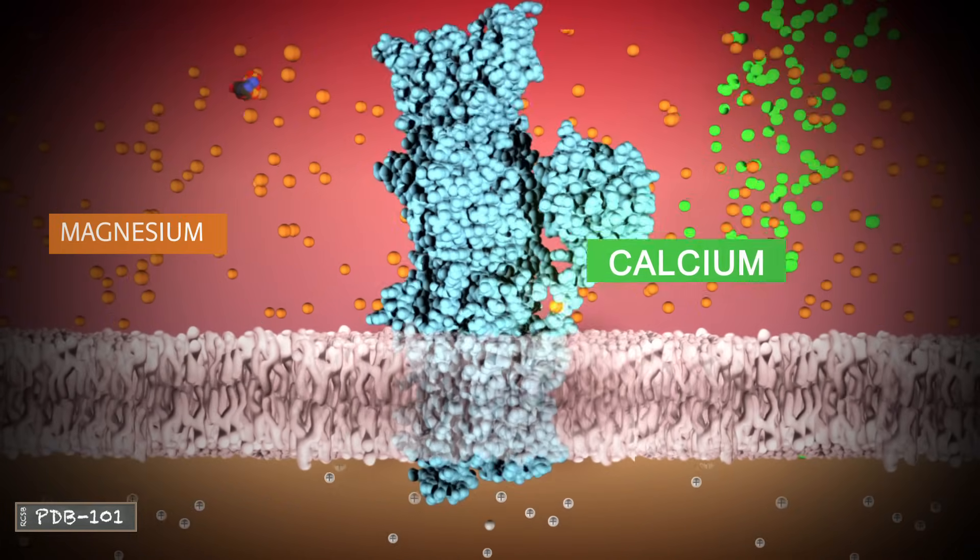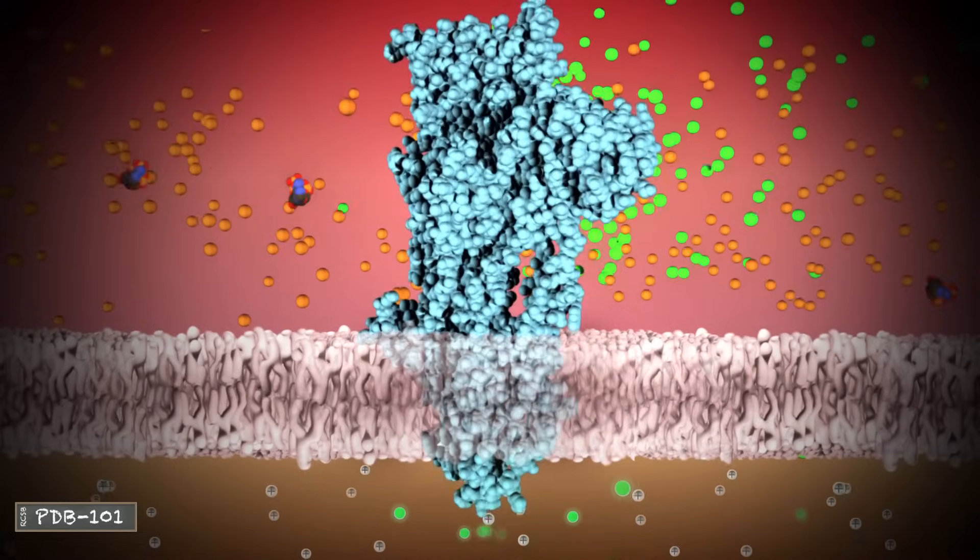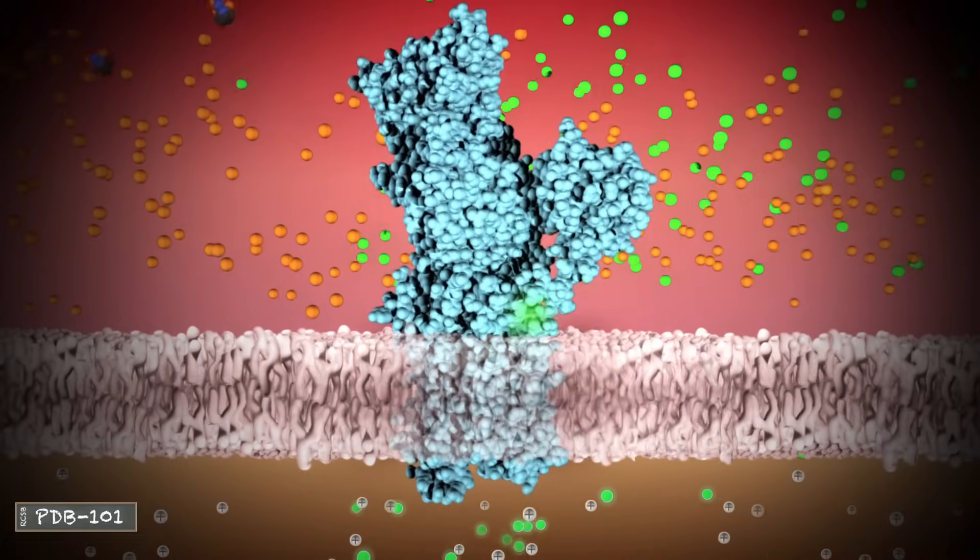The calcium pump is aided by magnesium and powered by ATP to move calcium ions back to the sarcoplasmic reticulum after each muscle contraction.